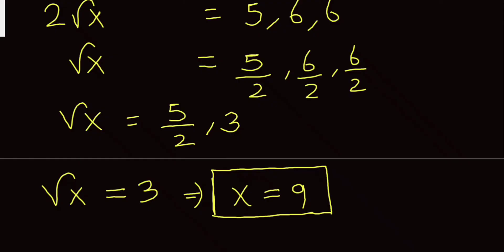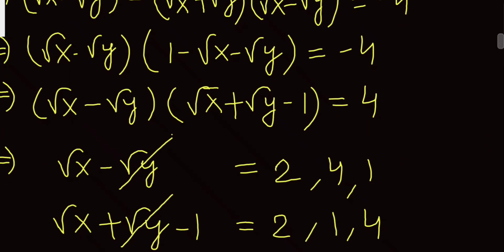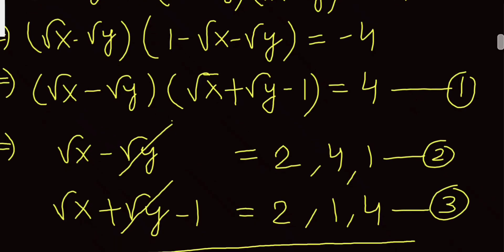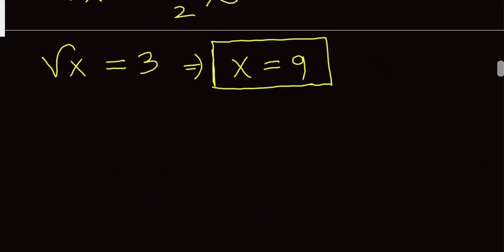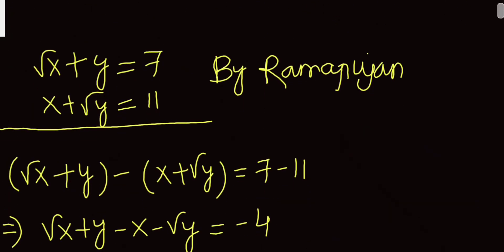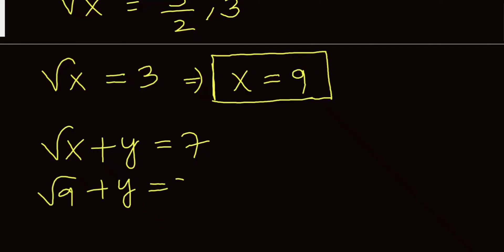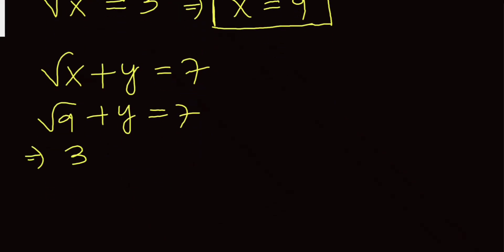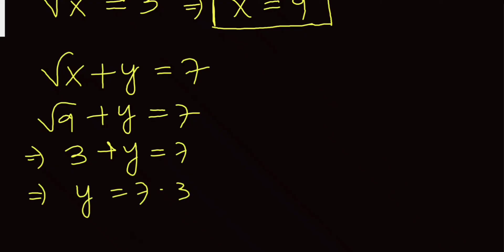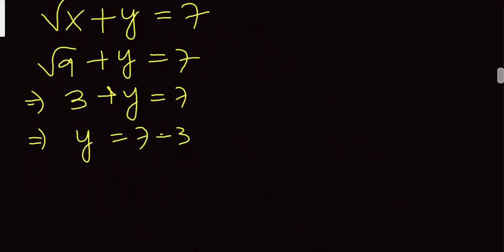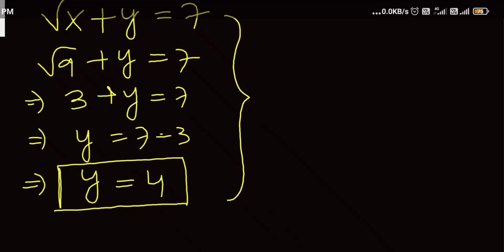Now substituting back into the original equation: √(x + y) = 7, with x = 9, we get √(9 + y) = 7, so 3 + y = 7 (taking √9 = 3), wait — actually √(9 + y) = 7 gives 9 + y = 49, but using √x + √y = 7 form: 3 + √y = 7, no — substituting into the equation we get y = 4.